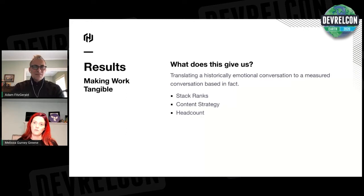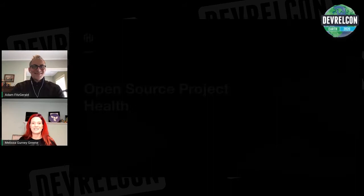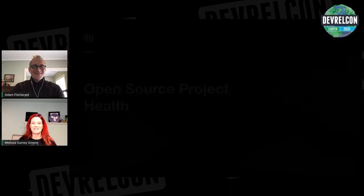Another super important area is headcount discussions — talking about the capability of the team and what the impact of adding new team members will be. It's easy to say 'we need two or three new team members, the team is swamped,' but it's much harder without the data to back that up. With this system, I can say: here's the challenge I need to solve, I want to make a bigger impact with this tool, and if I had a developer advocate here I can calculate the expected impact after ramp-up — that's a much easier conversation with leadership.